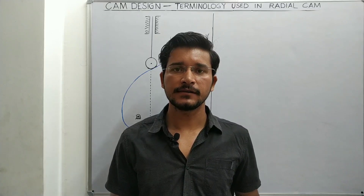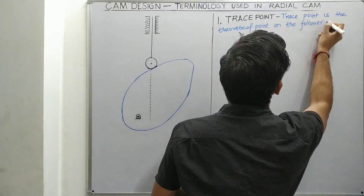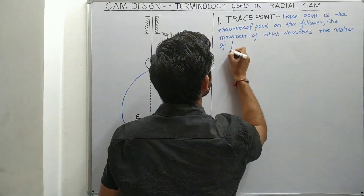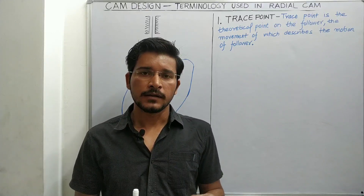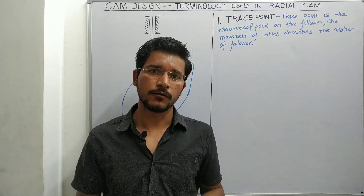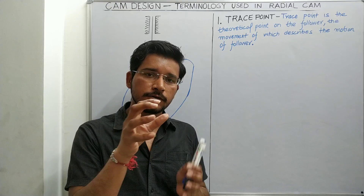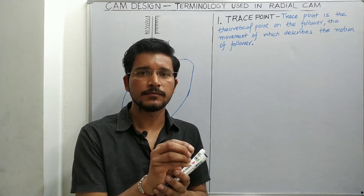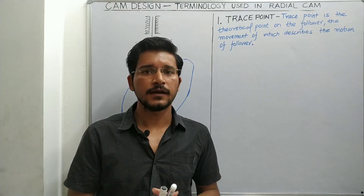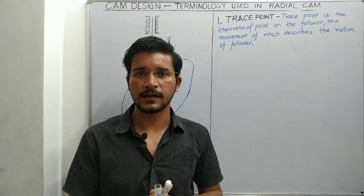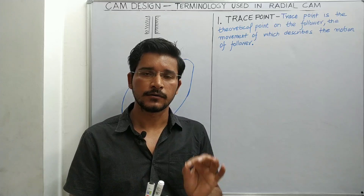What is the trace point of the radial cam? The trace point is the theoretical point taken on the follower, the movement of which describes the motion of the follower. There are different types of followers: knife edge follower, roller follower, flat-faced follower, and mushroom face follower. The trace point is a theoretical point which is taken on the follower.